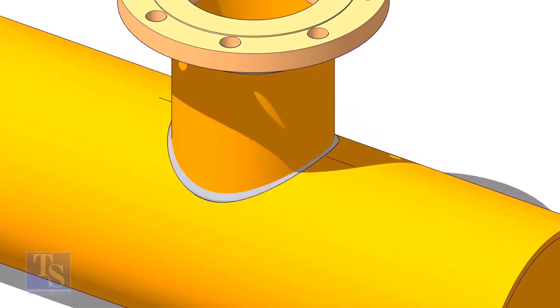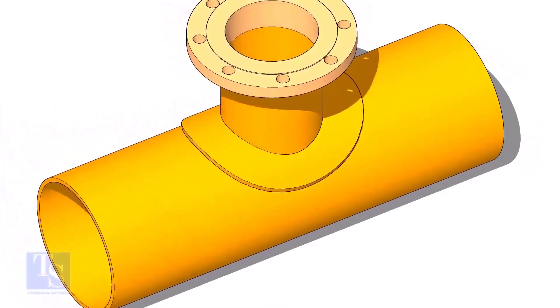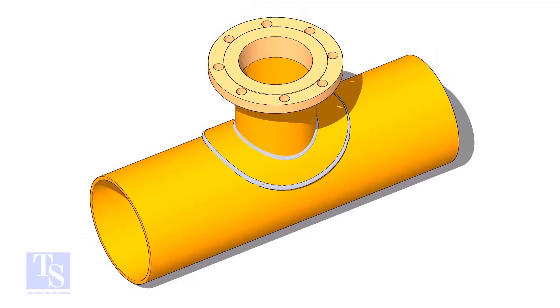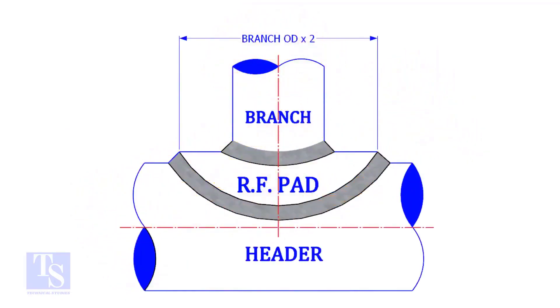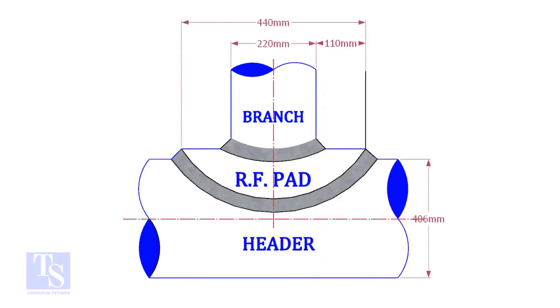A reinforcement pad or RF pad is used to strengthen the fabricated or welded pipe branch connection joints. Usually, the outer diameter of an RF pad is double the OD of the branch pipe. The OD of our branch pipe is 220 mm, so the outer diameter of our RF pad is 440 mm.